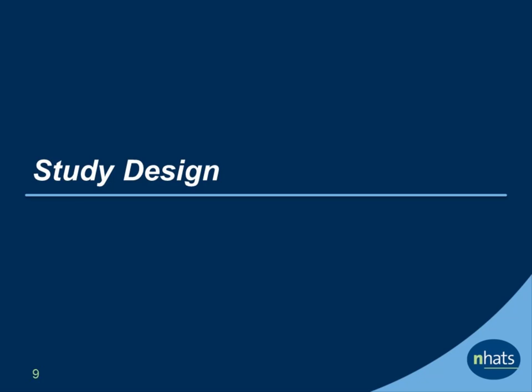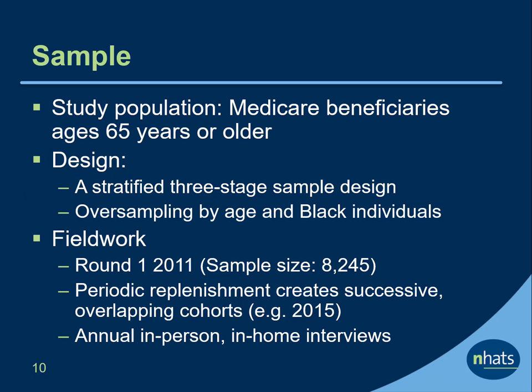Let's take a closer look at the NHATS study design. The NHATS study population represents Medicare beneficiaries ages 65 and older living in the contiguous United States. NHATS uses a stratified three-stage sample design and oversamples persons at older ages and black individuals. The initial cohort was interviewed in 2011. The sample is replenished periodically to maintain its ability to represent the older Medicare population.